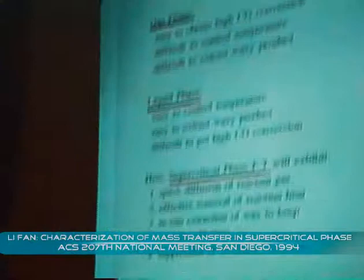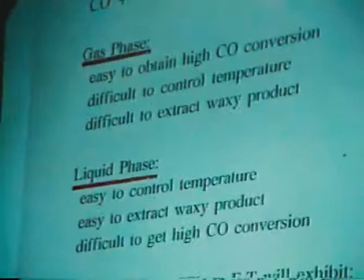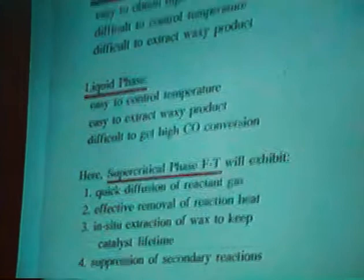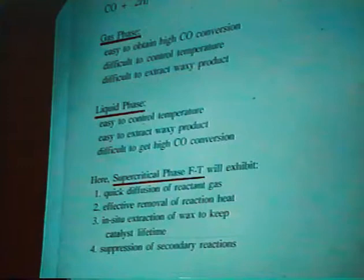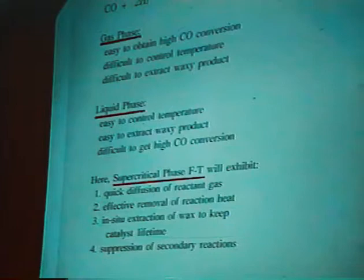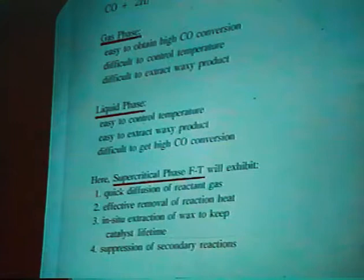In this figure, I want to compare some factors or features of gas-phase Fischer-Tropsch reaction, liquid phase reaction, as well as the supercritical phase Fischer-Tropsch reaction. As we know, the gas-phase reaction is easy to obtain high CO conversion, but it is really difficult to control the reaction temperature, especially at the initial state of the reaction. Also, it's really difficult to extract the waxy product from the catalyst bed.